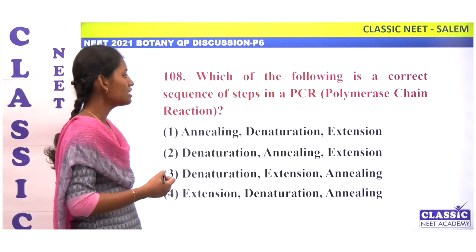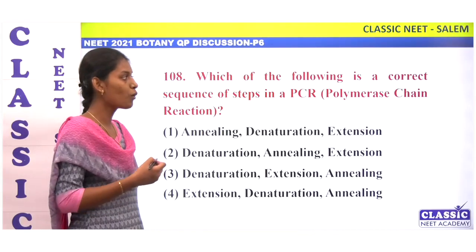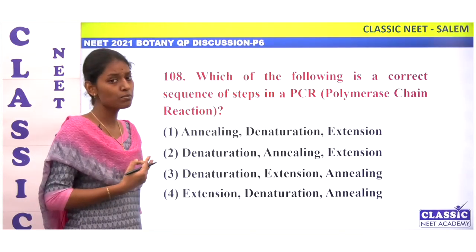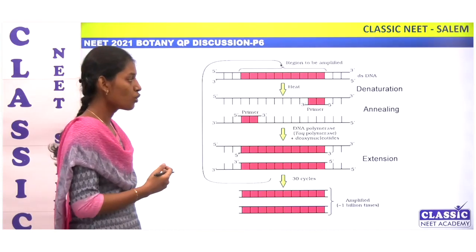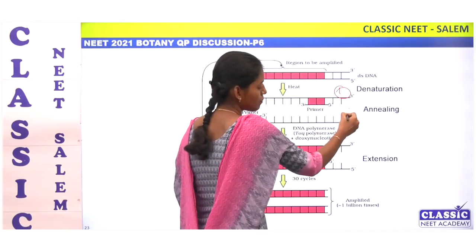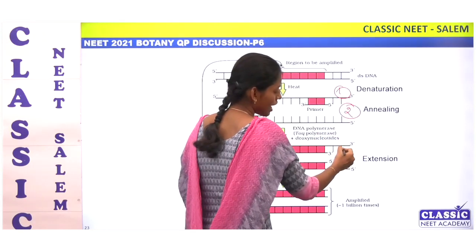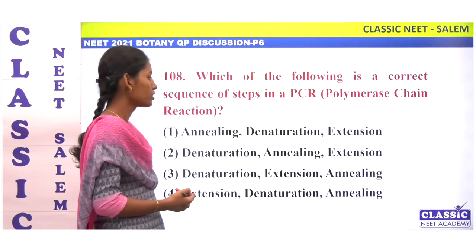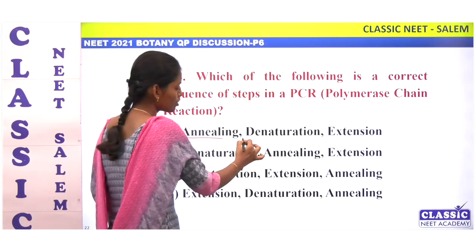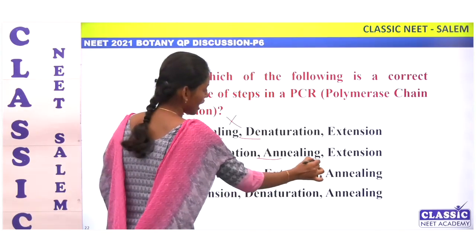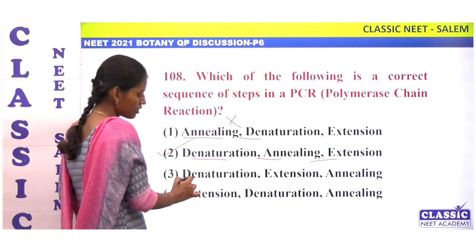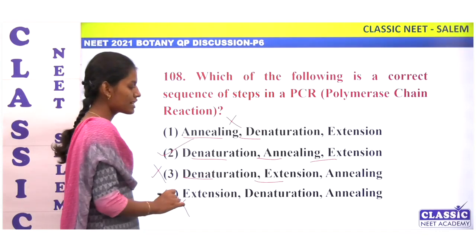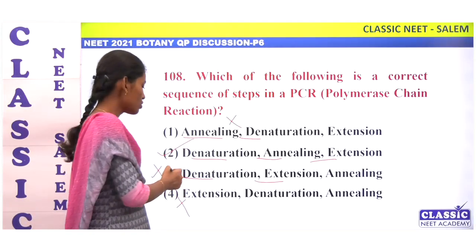Which of the following is a correct sequence of steps in PCR — polymerase chain reaction, an amplification process? There is a cycle of three steps: first is denaturation, second is annealing, and third is extension. The correct sequence is denaturation, annealing, and then extension. Option 2 is correct.